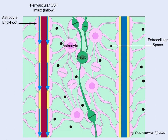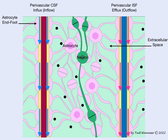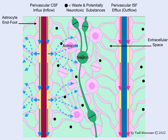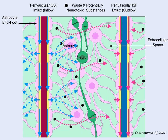There is a perivascular cerebral spinal fluid influx pathway and a perivascular interstitial fluid efflux outflow pathway. The black dots represent waste and potentially neurotoxic substances. Cerebral spinal fluid flows in the perivascular influx pathway to flow in between or through specialized channels within the astrocyte end feet, blending with interstitial fluid. The flow of interstitial fluid disperses vital nutrients to brain cells and picks up waste, carrying them to the efflux outflow pathway, where those substances flow through astrocyte end feet to outflow pathways and back to systemic circulation.